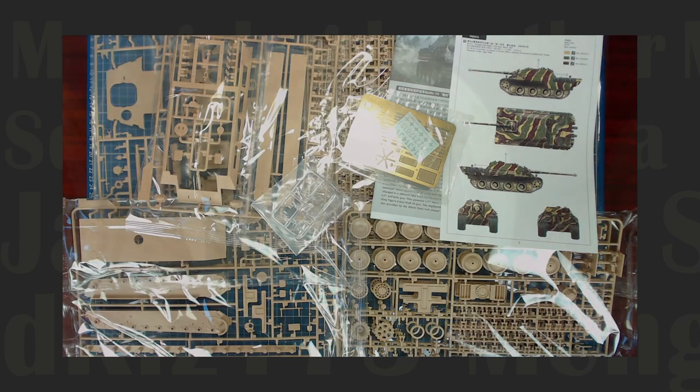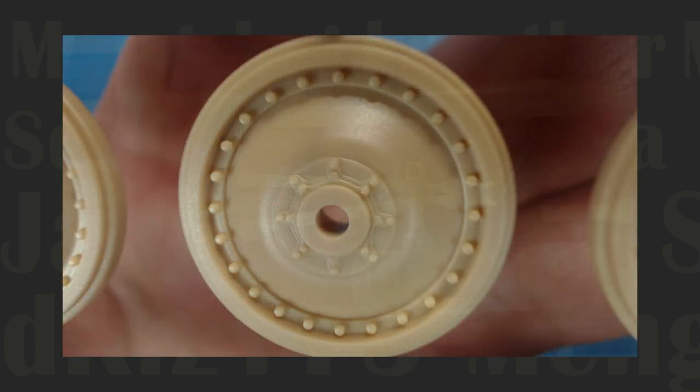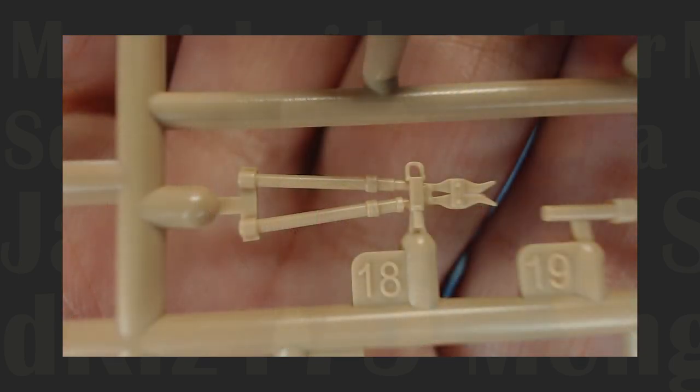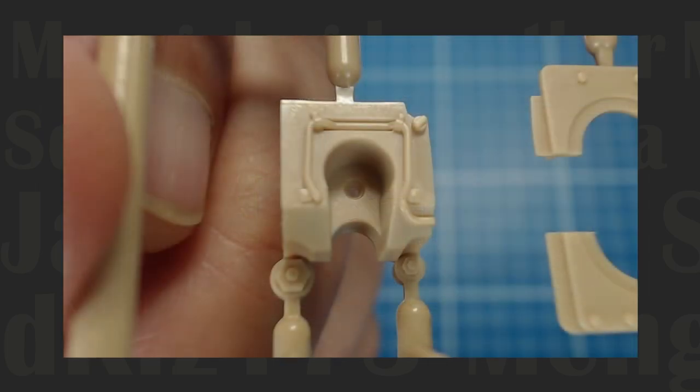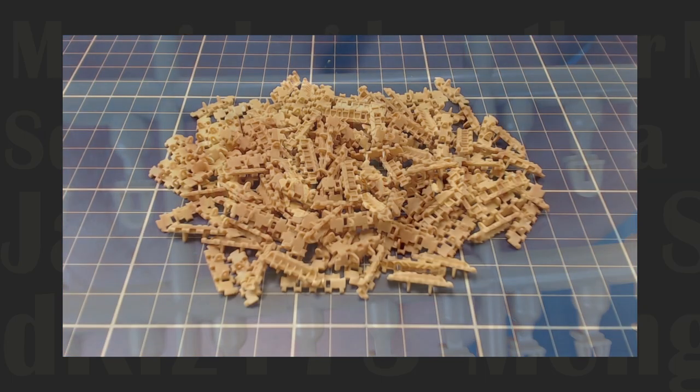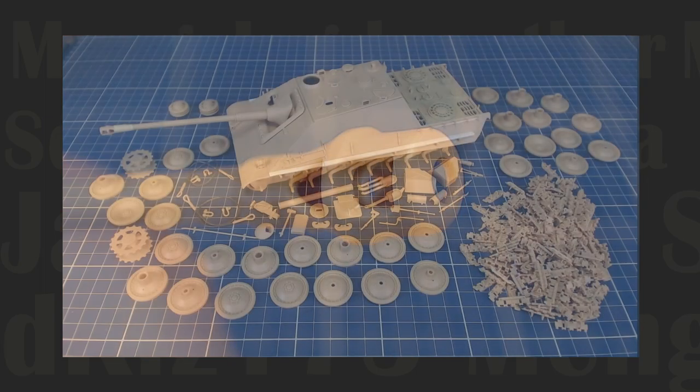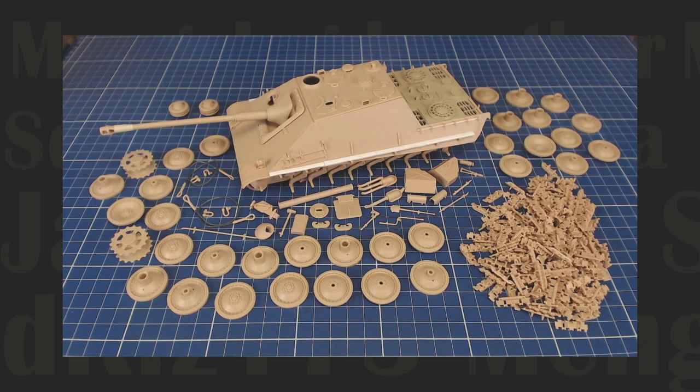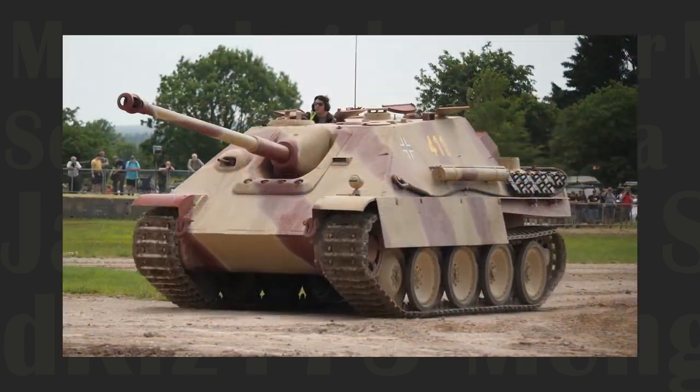Our unboxing revealed a beautifully detailed and cast kit consistent with other Meng models we've built on the series. The photo etch and clear parts were nice additions, but the multi-part individual track links with separate guide horns meant we were in for a few tedious hours of cleanup and assembly. Still, with a little patience and perseverance, we were able to whip the parts into a beautiful specimen of this feared tank hunter.